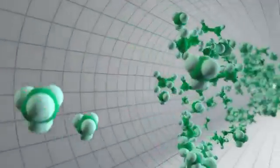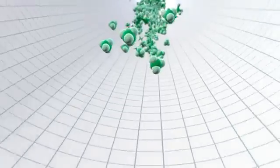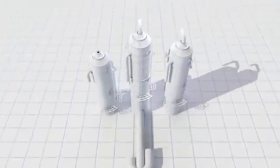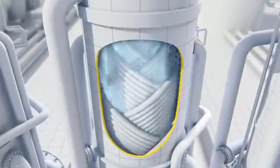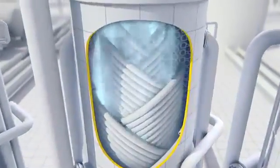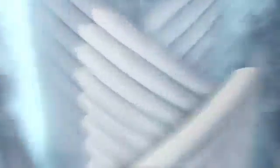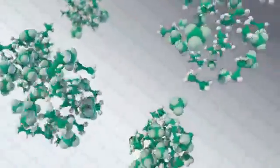Now the purified natural gas, methane with some ethane, is ready to be liquefied. This happens in heat exchangers. A coolant, chilled by giant refrigerators, absorbs the heat from the natural gas. It cools the gas to minus 162 degrees centigrade, shrinking its volume by 600 times.